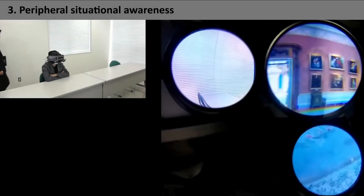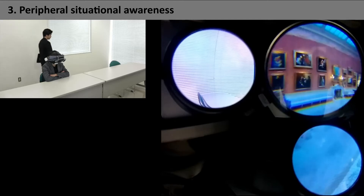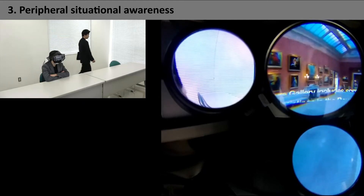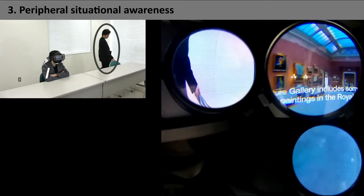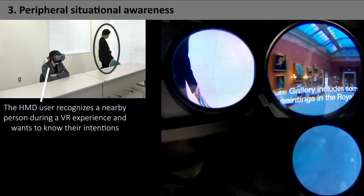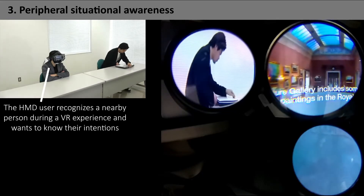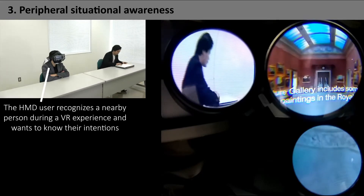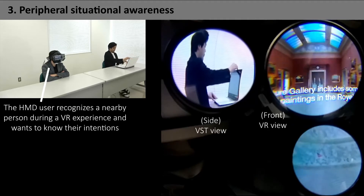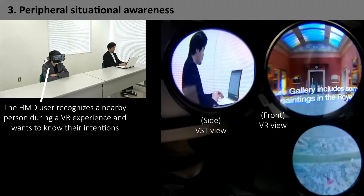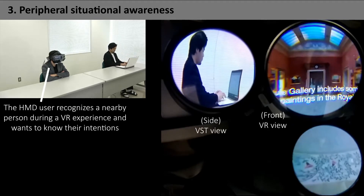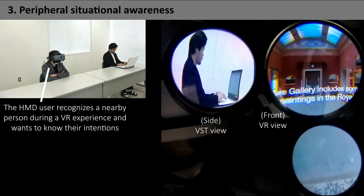The third interaction scenario is peripheral situational awareness. In this scenario, the HMD user recognizes a nearby person during a VR experience and wants to know their intentions. To do this, the side module displays the real world environment by video see-through.